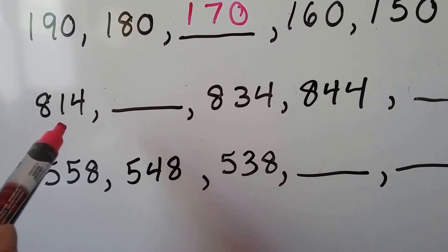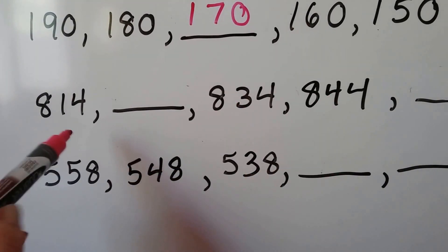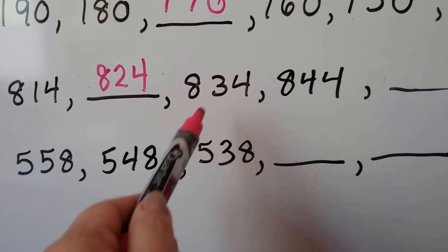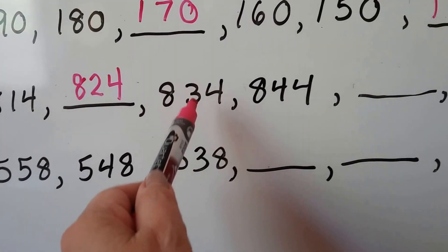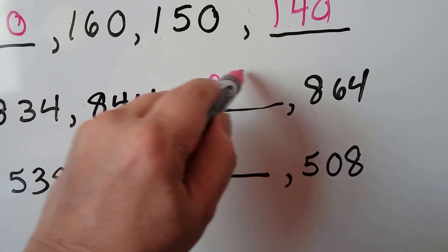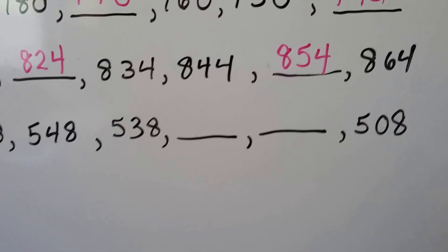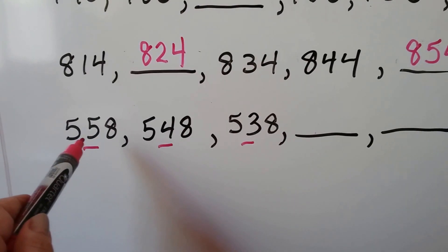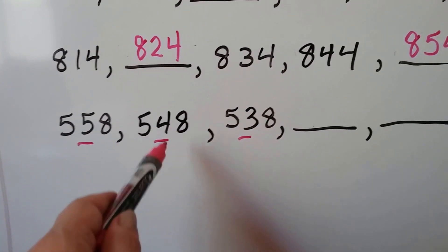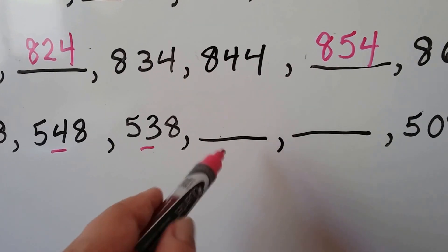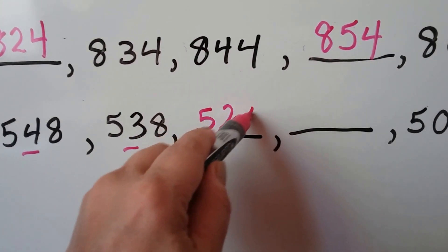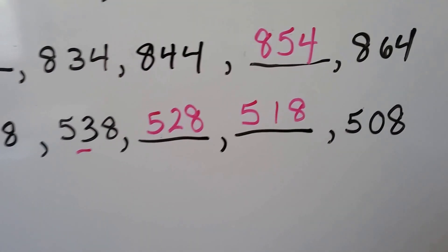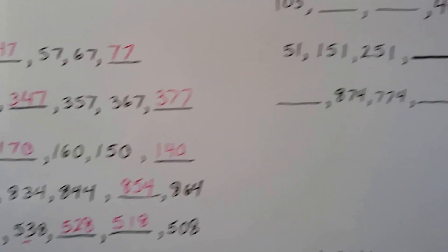The tens place is getting larger and counting on. We have a three and then a four, so one larger ten than the previous would give us 824 — that's one more ten. So we have one, two, three, four in the tens place, and five in the tens place would be 854. Next example: five, four, three in the tens place — it's counting back. One less than three is two, so it'd be 528, and one less than two would be 518. If that's what you got, you're right!